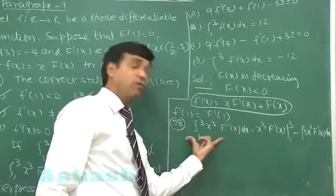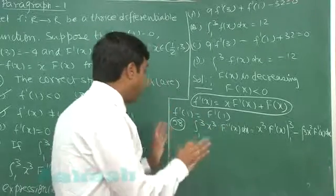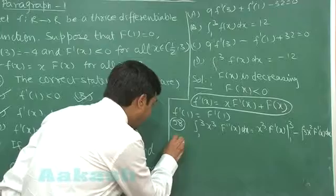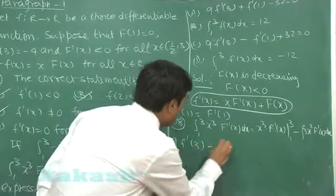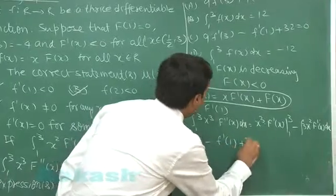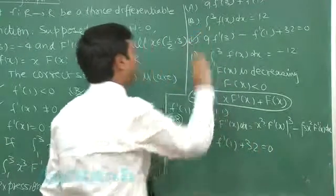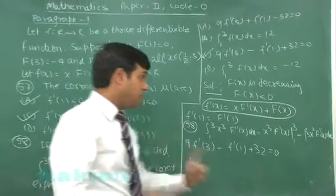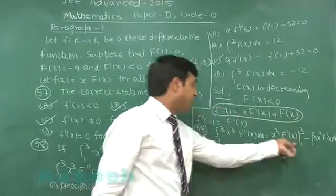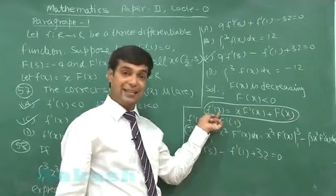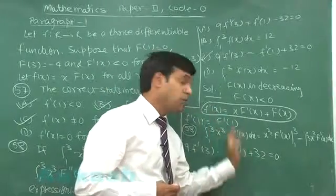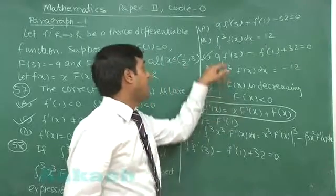On simplifying we finally get the equation 9 F dash 3 minus F dash 1 plus 32 is equal to 0, that is option C. I repeat, capital F dash x we can get from here in terms of small f dash x and then we can get the value substituting here as option C the correct one.